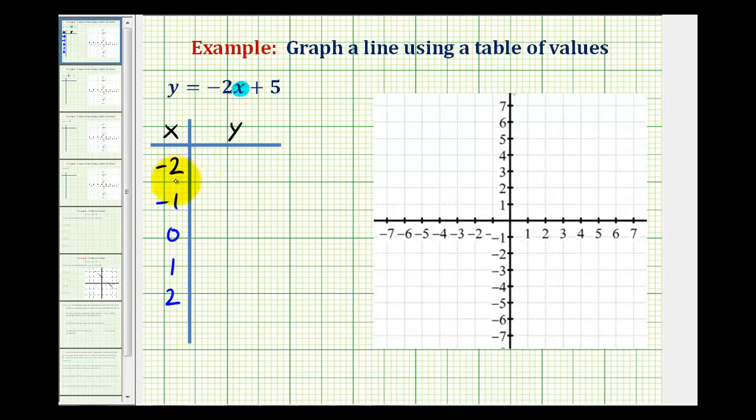So when x is equal to negative two, notice that y is going to be equal to negative two times negative two plus five. Well negative two times negative two is four. Four plus five equals nine. So this tells us that one point on the line would be the point having the coordinates negative two comma nine.